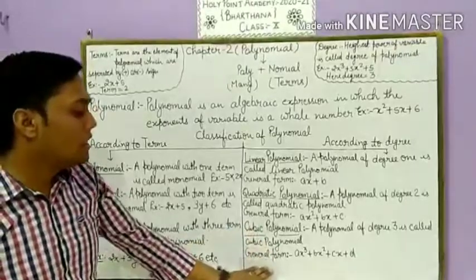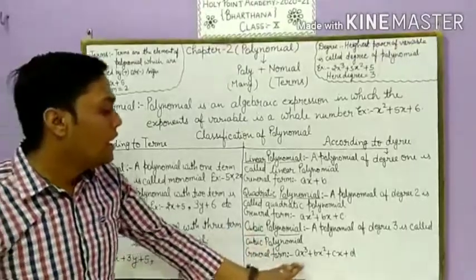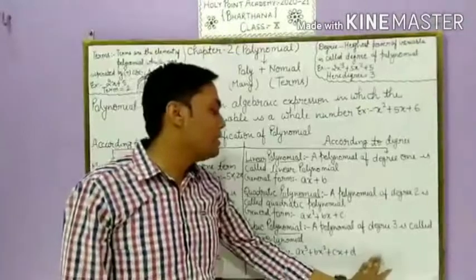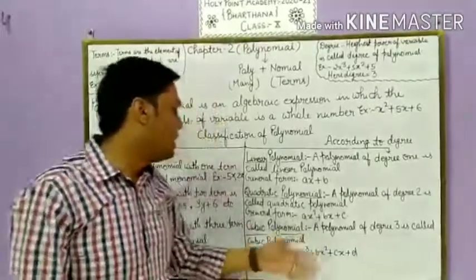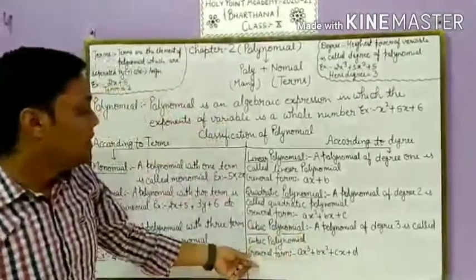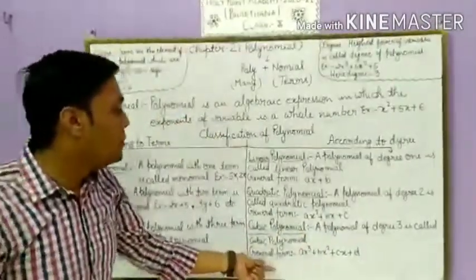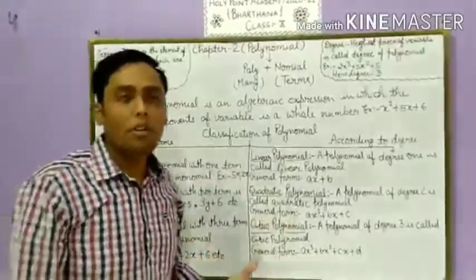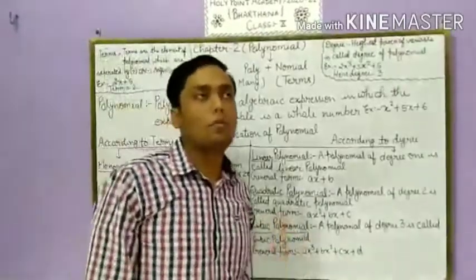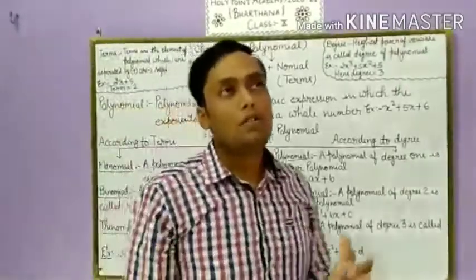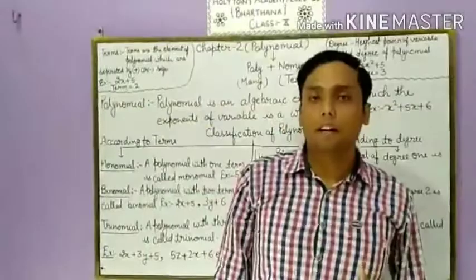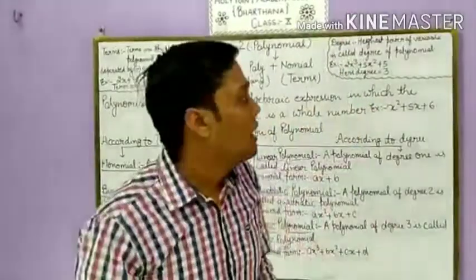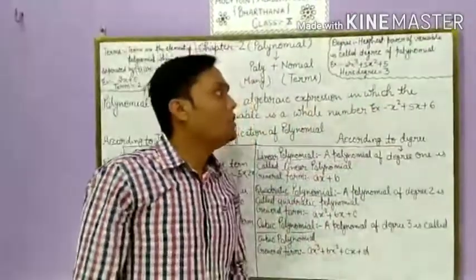After that, there is one more polynomial — the biquadratic polynomial. A biquadratic polynomial is a polynomial whose degree is four. Thank you, students.